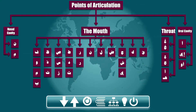Now let's take a look at the tree of the Makharij. We have the oral cavity — these are what we will be covering today. We have the throat, the letters of the throat. We have the mouth, these are the letters of the mouth each according to their point of articulation, and we have the nasal cavity.